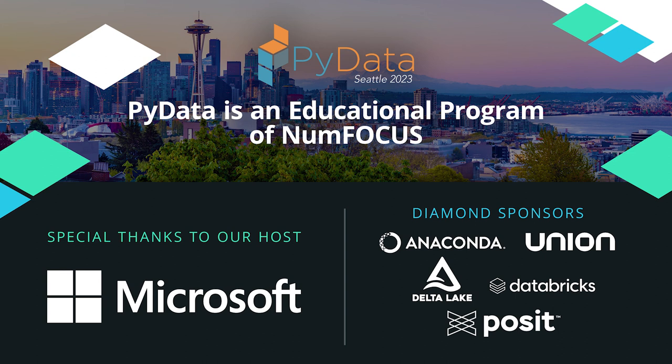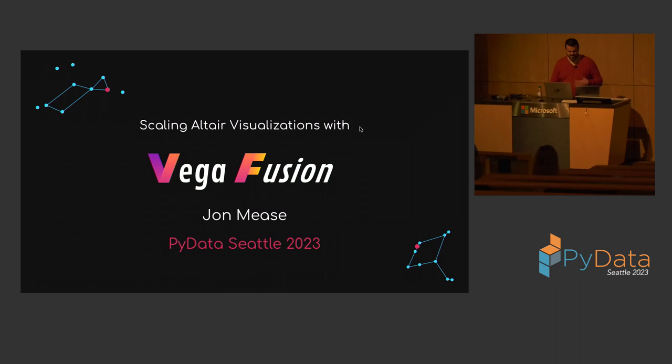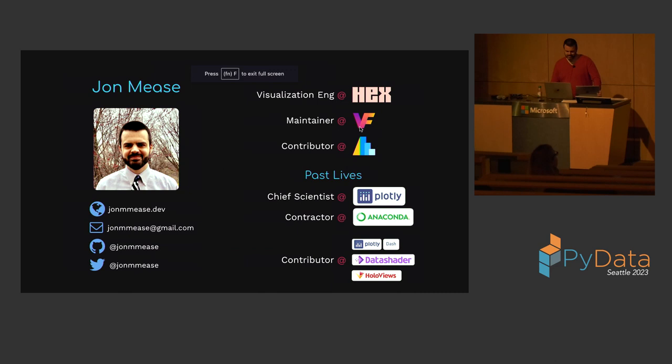John Meese is a visualization engineer at Hex Technologies. He's going to tell us about Vega Fusion. Thank you everyone for coming. I really appreciate this opportunity to talk with you all about this work to scale Altair visualizations with Vega Fusion. My name is John Meese. I'm a visualization engineer at Hex. I'm the creator and maintainer of Vega Fusion and a contributor to Altair.